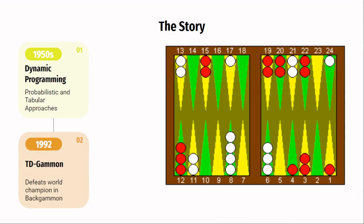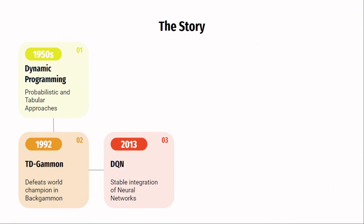Until in 1992, an RL agent almost defeated the world champion in the game of backgammon. This was the first time neural networks integrated into reinforcement learning. In 2013, deep learning methods made it possible to successfully integrate neural networks into reinforcement learning seamlessly.